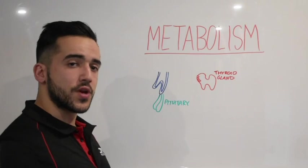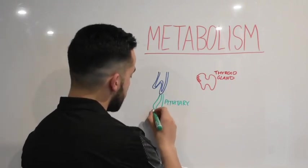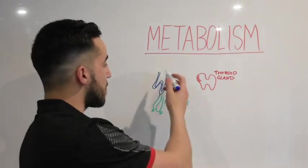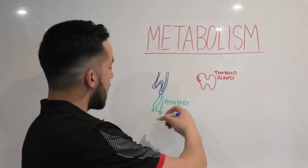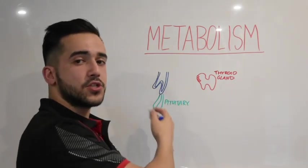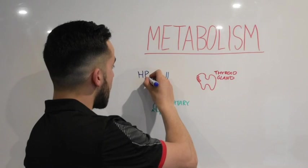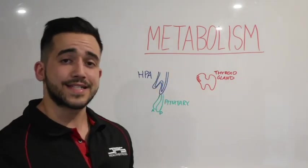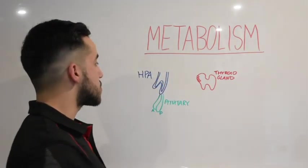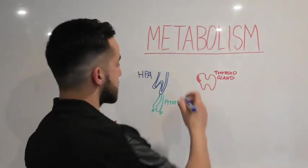We have a posterior pituitary and an anterior pituitary, and they interact with the hypothalamus. We can call this interaction the hypothalamic-pituitary axis, or HPA. You might have seen that term in textbooks — that's what it stands for: hypothalamic-pituitary axis.